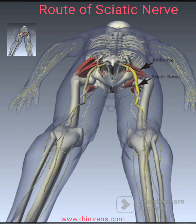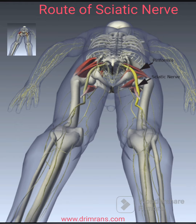It descends between the greater trochanter of the femur and the ischial tuberosity. Initially deep to piriformis, it runs inferiorly and laterally posterior to the ischium, crossing over the nerve to quadratus femoris.